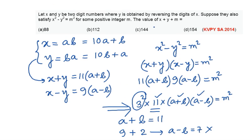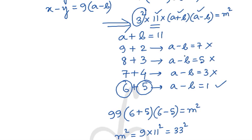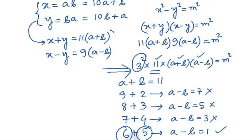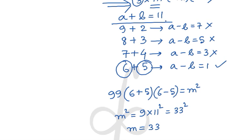So we need to find the value of x + y + m. So to find the value of x + y + m we know x + y is 11 times (a + b) and we already know the value of a + b to be 11.